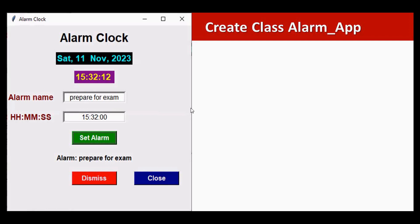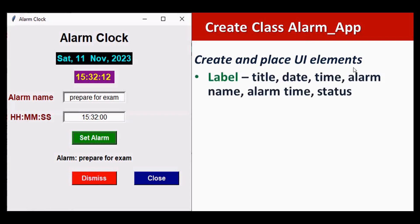This is what we are going to design. For this, inside the class AlarmApp we are going to create and place UI elements. What are the labels required in our app? This title, and then date, time label, and here alarm name and alarm time label, and one more label called status.